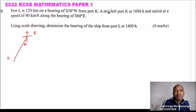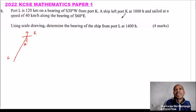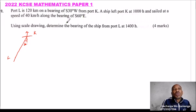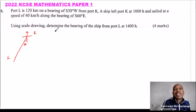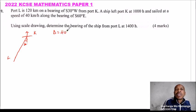The ship left port K at 10:00 hours. How many hours from 10:00 to 14:00? That is 4 hours. Distance equals speed times time, so we have 40 multiplied by 4. The ship had covered 160 kilometers.